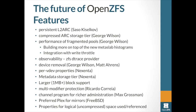Per-vdev properties: currently properties apply across a whole pool, but you may want different properties per vdev — for example if you have different disk types. One example is a pool created with 512-byte sector disks where you want to add a new vdev with 4K sector disks. Setting a different ashift per vdev is one future use case. Both FreeBSD and Linux have implementations for specifying ashift, with various hacks to override disks that falsely report 512-byte sectors.